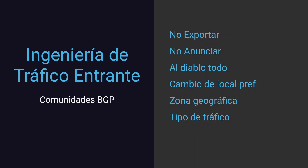En el tráfico entrante nos suelen dar otros desafíos. Podés enviarle un valor del Multi-Exit Discriminator a tu peer, pero no tiene por qué darle bola — puede ignorarlo, lo puede pisar. Lo mejor sería que tu peer te pida que uses ingeniería de tráfico entrante con comunidades BGP. ¿Qué clase de ingeniería podemos hacer con comunidades BGP? Principalmente: no exportar, no anunciar, black hole, cambio de local preference, clasificar según zona geográfica o tipo de tráfico.